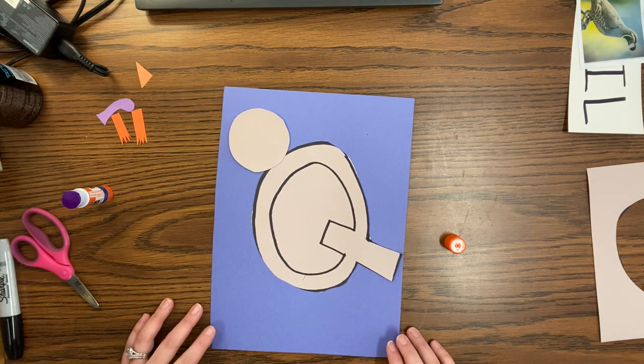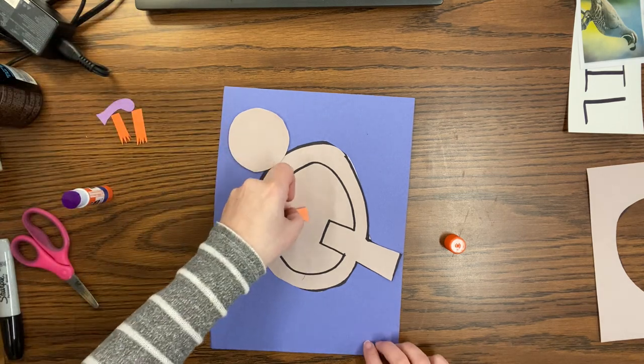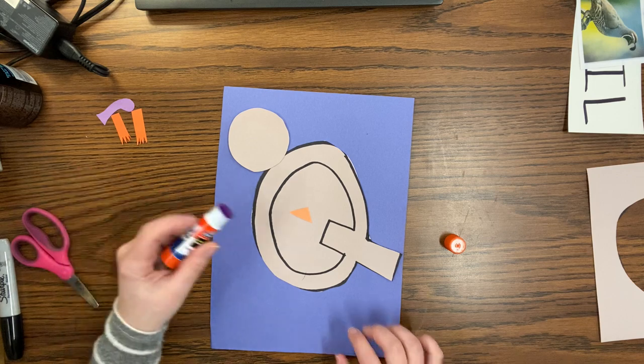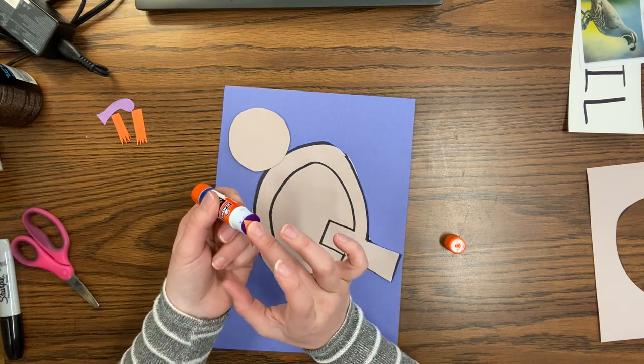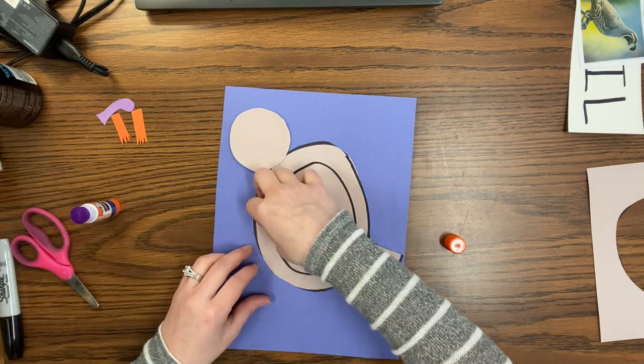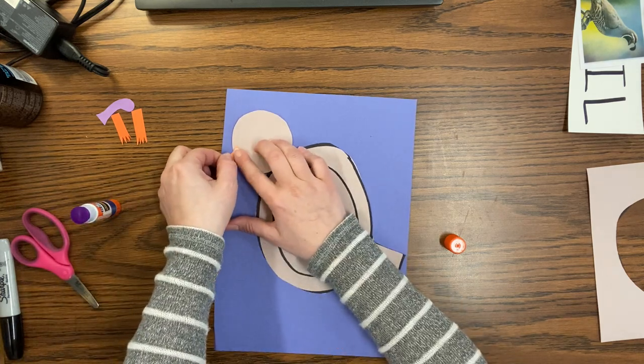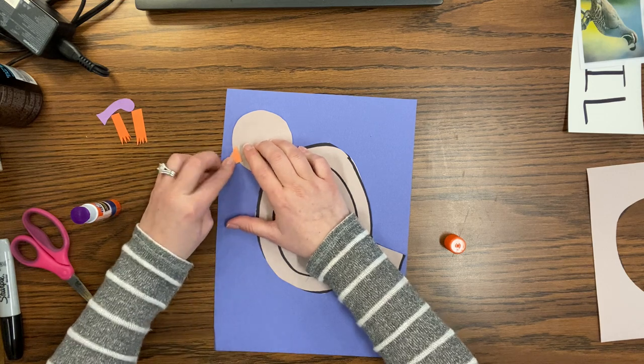Once we're done with that, we're going to find our orange triangle. Find your orange triangle and put some glue on there. And then we're going to put our orange triangle. So we're going to attach it to our circle.